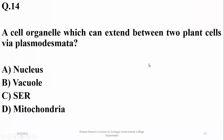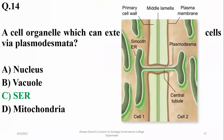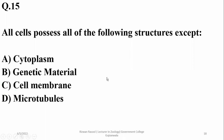Question 14: Which organelle can extend between two plant cells via plasmodesmata? Mitochondria cannot generally extend between plant cells — they are limited within one cell. Smooth endoplasmic reticulum sometimes sends strands through plasmodesmata between cells. Right option is C (smooth endoplasmic reticulum).